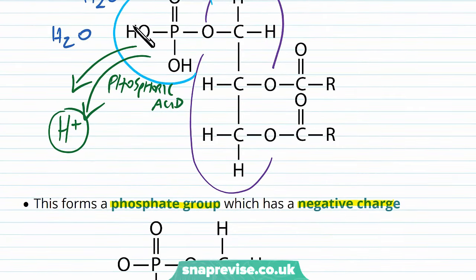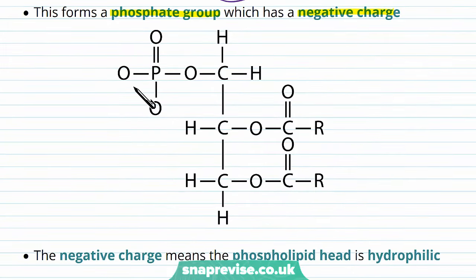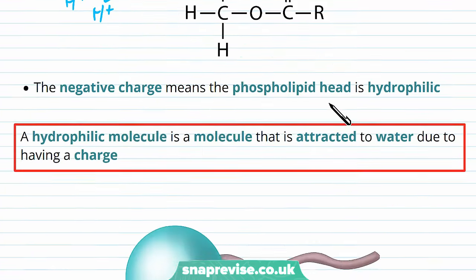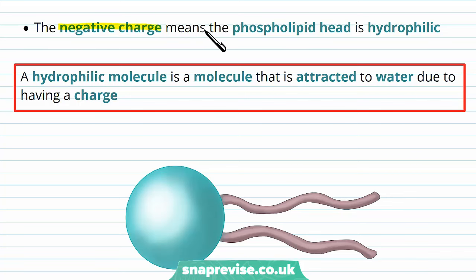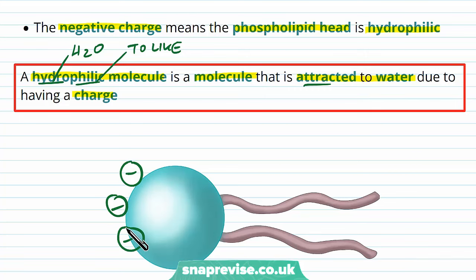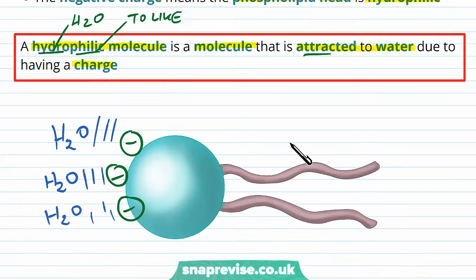Comparing the diagrams, originally we had H's on the two OH groups. Now those H's are lost, each oxygen giving off an H+, and because they've lost positive charge, those oxygens each carry a negative charge — so the overall phosphate group has a negative charge. Molecules with a charge like this are what we call hydrophilic. So the phospholipid head is hydrophilic — a hydrophilic molecule is attracted to water due to having some sort of charge. Hydro means water, and philic means to like, so the phosphate head likes and is attracted to water.